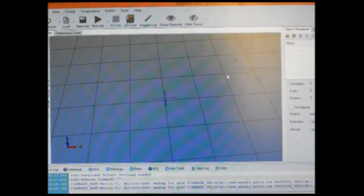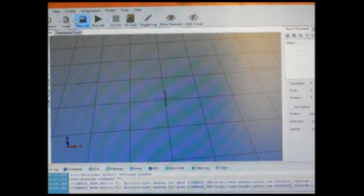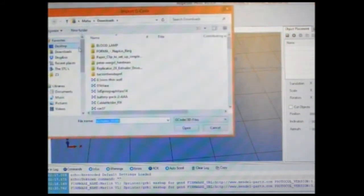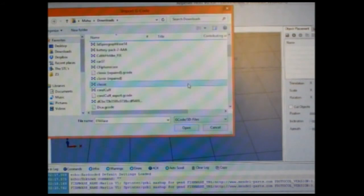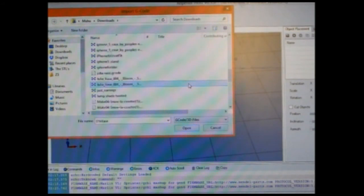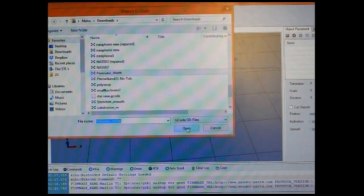Once you upload your new E-step value, go to Repetier Host. Go to load, download any calibration object. We have downloaded perimeter width from Thingiverse. Open it.